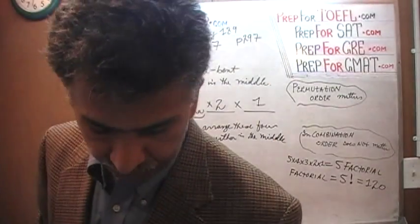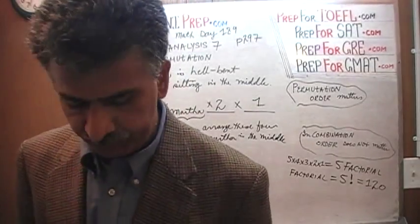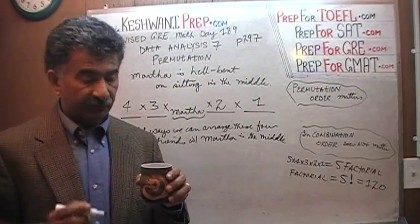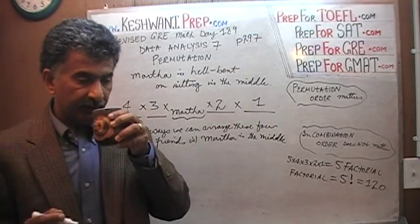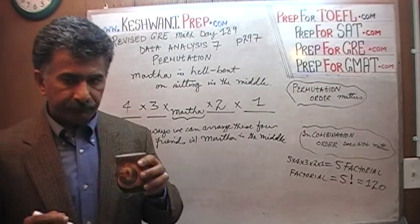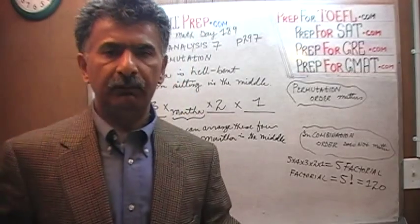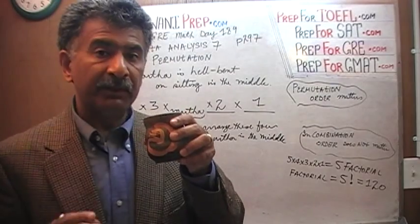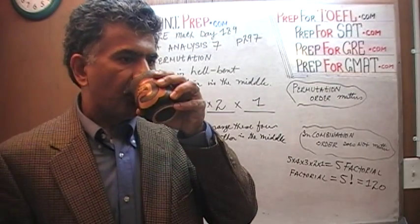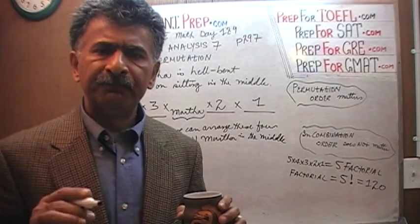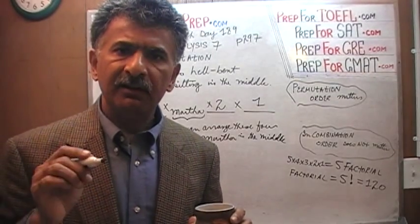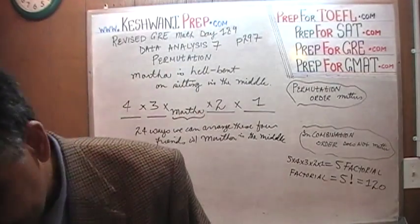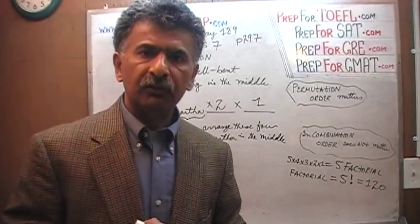Now, the way that this same question could appear in the exam is something like this. Listen carefully. Five people are sitting in a certain order. Five people are to be seated. Five people are to be sitting in five spots. At random.